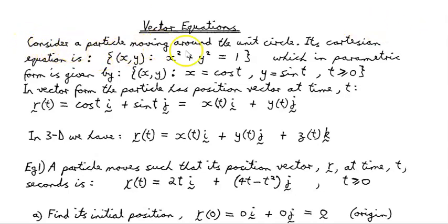So, let's consider a particle moving around the unit circle. Now, its Cartesian equation is given by the set of points (x, y), ordered pairs x, y, such that x² + y² = 1.